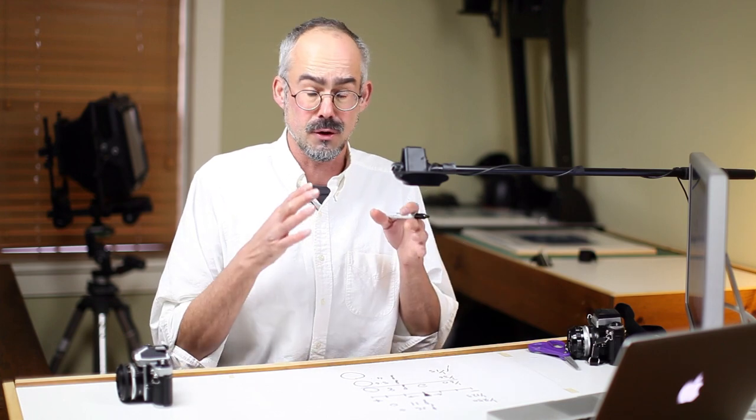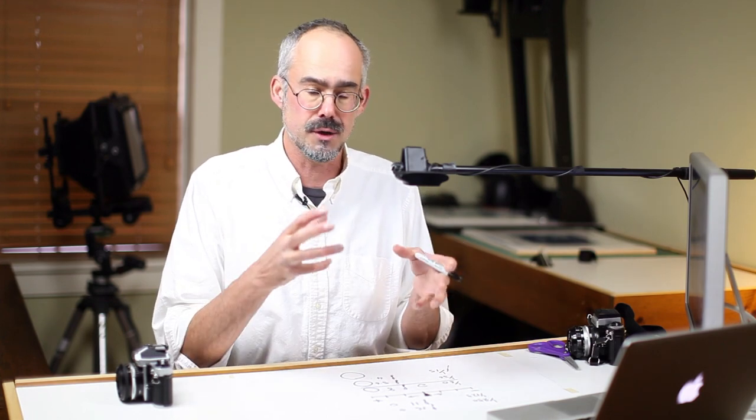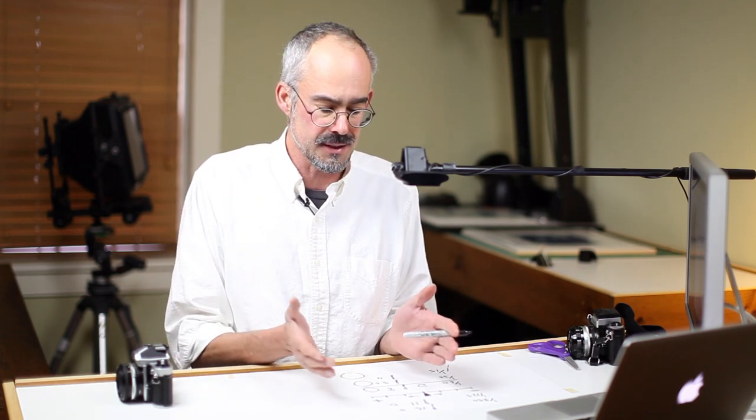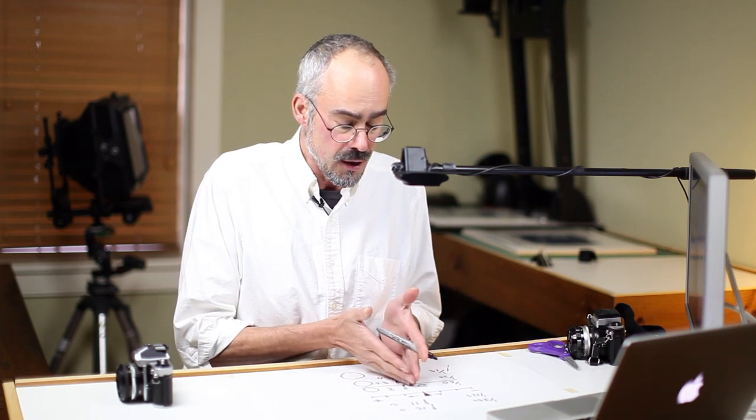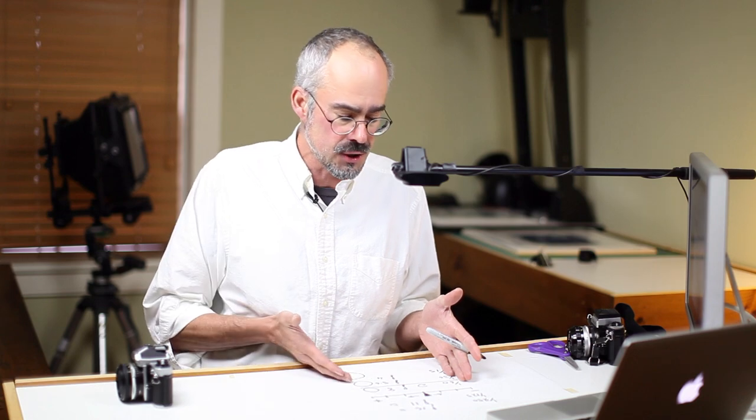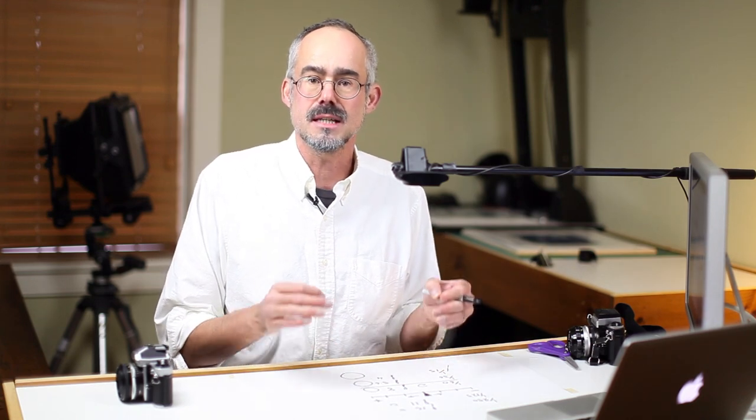Set your camera up on a tripod if you have one, or in a windowsill, just pointing at a scene with a range of brightnesses. Outside is ideal where you've got a range of brightnesses. Get your correct exposure according to the camera, and then begin to change shutter speeds and apertures individually to see what happens.